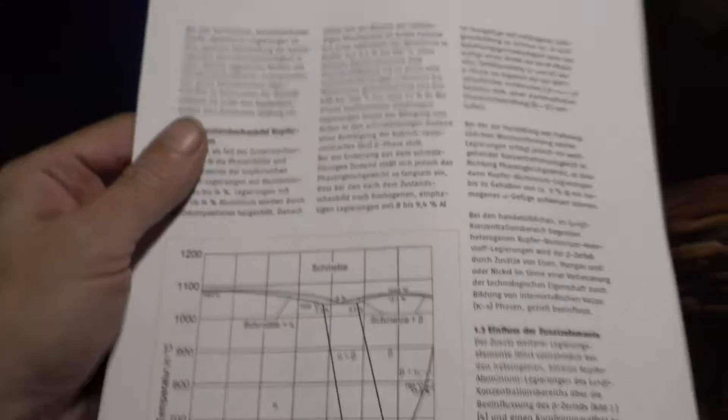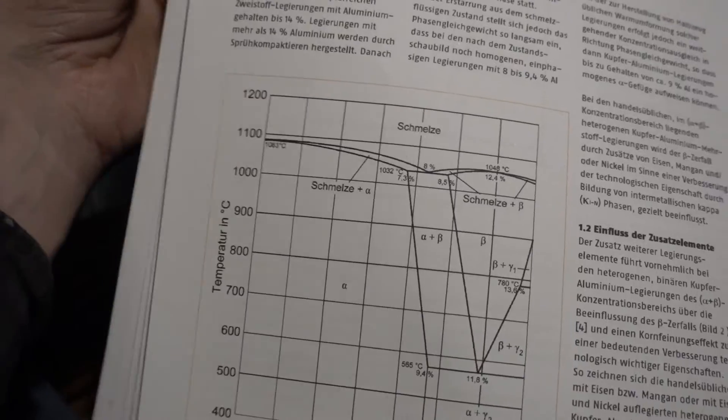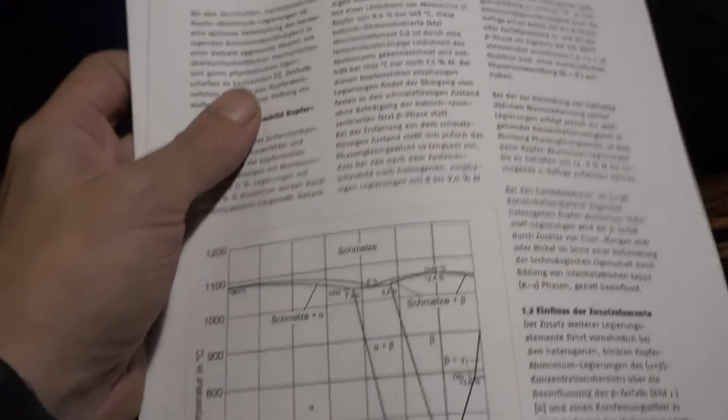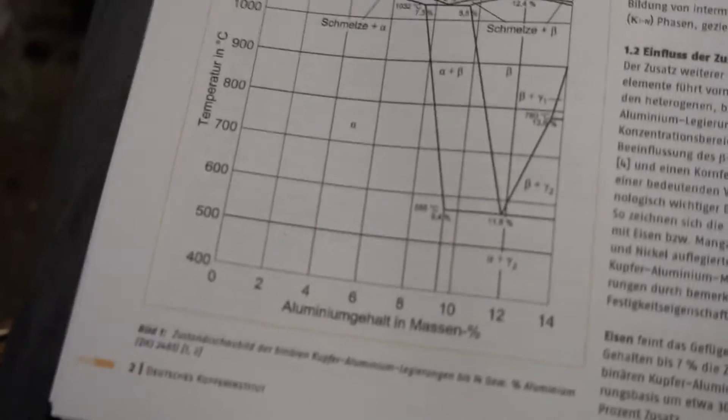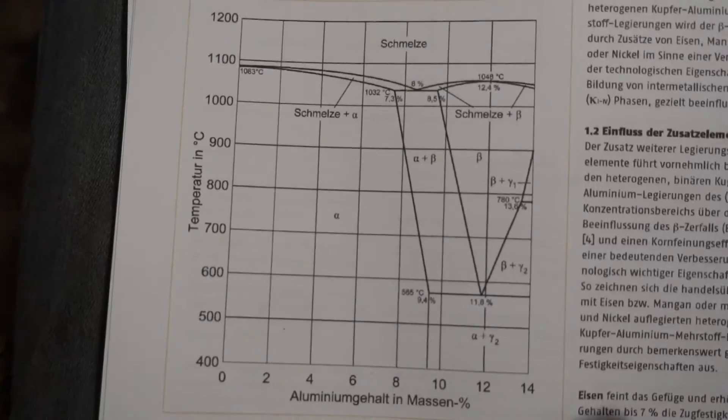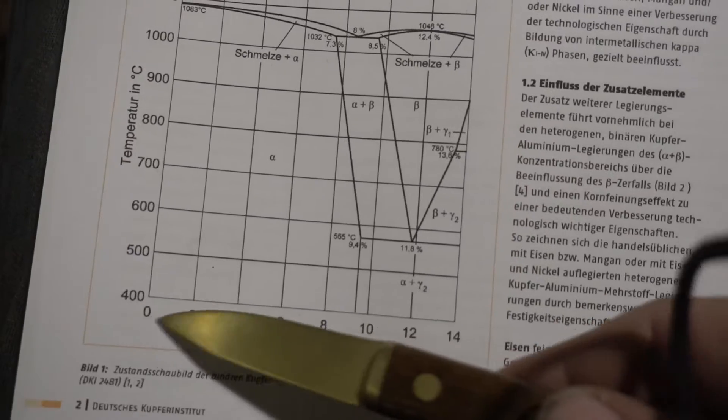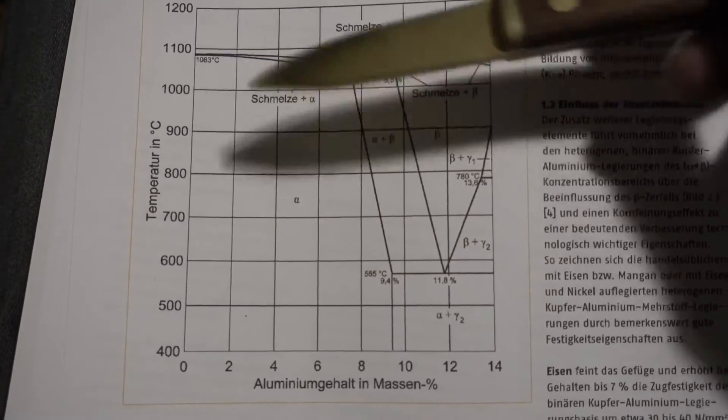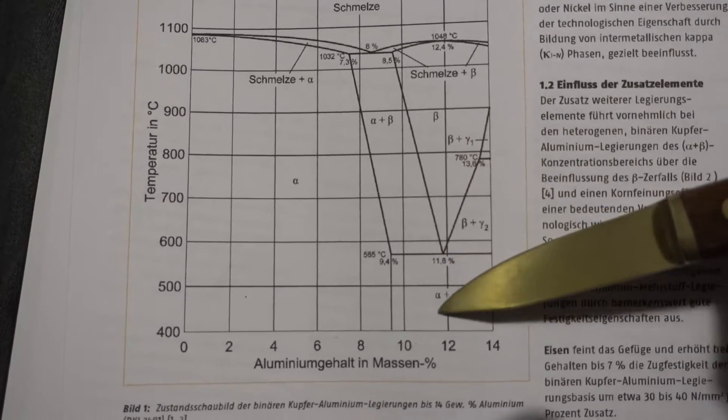I've printed out some stuff. This is some paper on aluminum-copper alloys from the German Copper Institute. You can see - I hope you can see it - the diagram. Let's focus on it a little more.